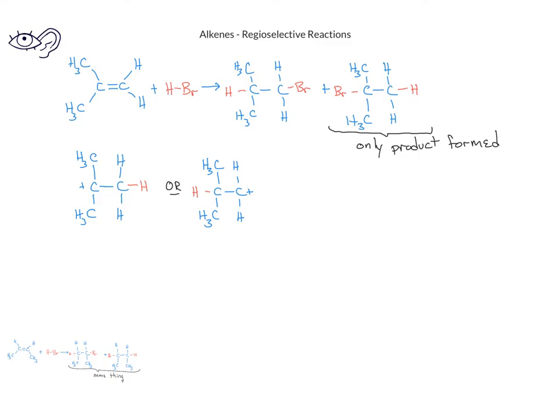We can look at the carbocations and classify them the same way we classified alcohols. In this first carbocation, the carbon with the positive charge is bonded to three other carbons. This is called a tertiary carbocation. The other carbocation has the carbon with two hydrogens and a positive charge attached to only one other carbon. This is a primary carbocation.